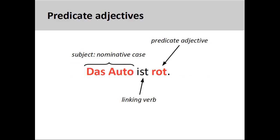In the sentence you see on the screen, das Auto ist rot, the car is red, the neuter noun das Auto is the subject of the sentence and therefore in the nominative case. The adjective rot is also in the nominative case as it appears after the linking verb ist.